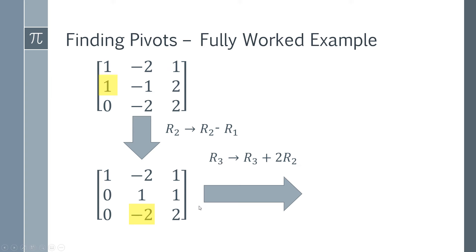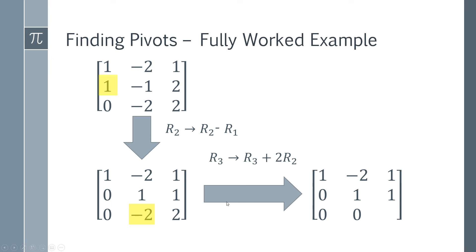Next, we target another entry: row three is going to become row three plus two times row two. Working it out: zero minus two plus two times one gives zero, and two plus two times one gives four. This is now in row echelon form — you can see the staircase pattern. We can circle all the pivots: a pivot here, a pivot here, and a pivot here. It turns out all columns are pivot columns, so our pivots are one, one, and four, and the pivot columns are column one, column two, and column three.